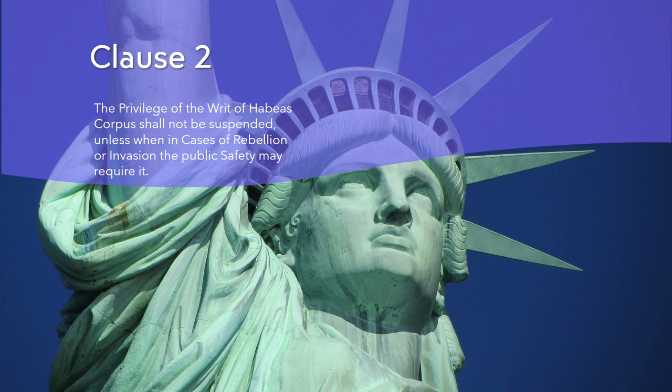The Writ of Habeas Corpus has been invoked many times throughout American history, especially during times of war and civil unrest. For example, during the Civil War, President Abraham Lincoln suspended the Writ of Habeas Corpus in some states to deal with Confederate sympathizers and spies. During World War II, President Franklin D. Roosevelt authorized the internment of Japanese Americans, which was later challenged by some detainees using Habeas Corpus petitions.